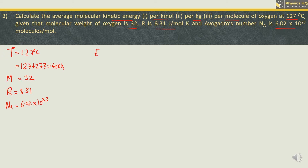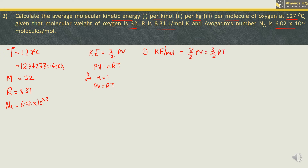Using E = (3/2)PV and the ideal gas equation PV = nRT, for one mole (n=1), PV = RT. So kinetic energy per mole = (3/2)RT. To convert to per kilomole, multiply by 10³. So E per kilomole = (3/2) × 8.31 × 400 × 10³ = 6 × 8.31 × 10⁵.